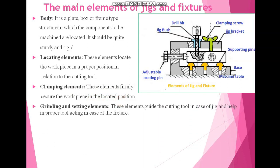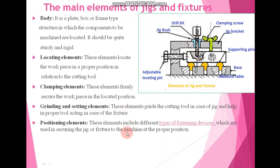Next, we have guiding and setting elements. These elements guide the cutting tool in the case of a jig and help in proper tool setting in the case of a fixture. This jig bush indicates the guiding and setting element. It will help the cutting tool for doing any machining operation over the workpiece in the specified position. Then we have positioning elements. These elements include different types of fastening devices which are used for securing the jig or fixture to the machine at the proper position.